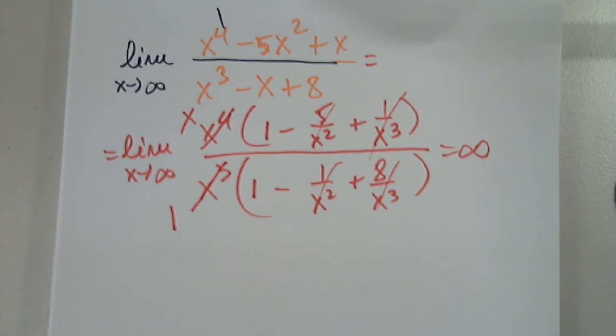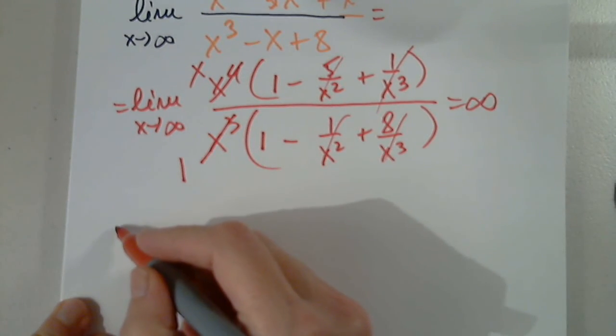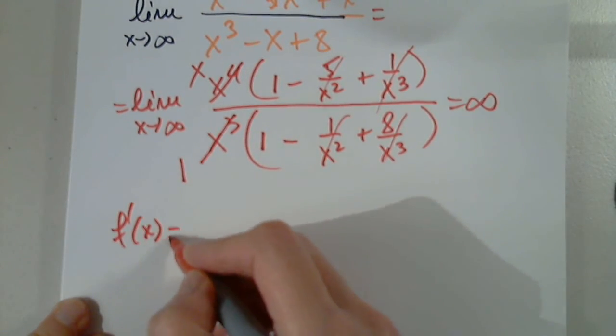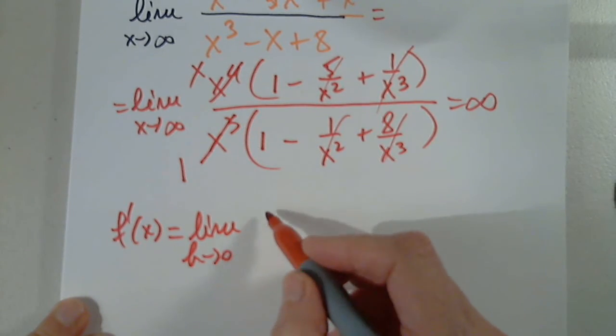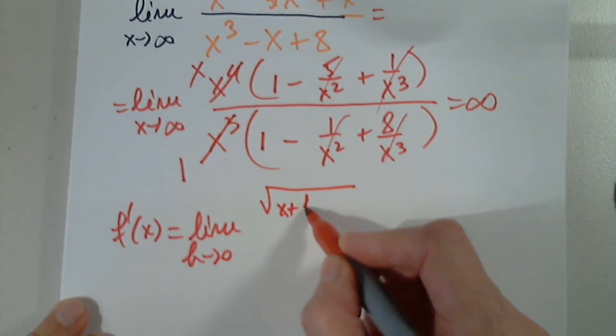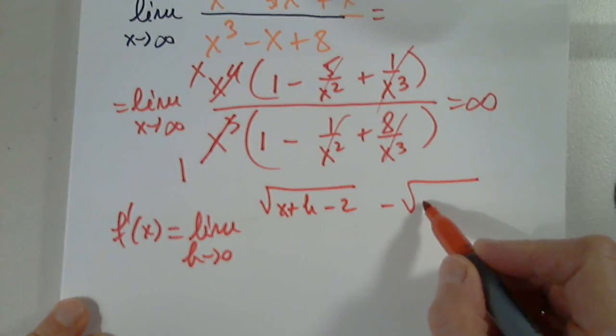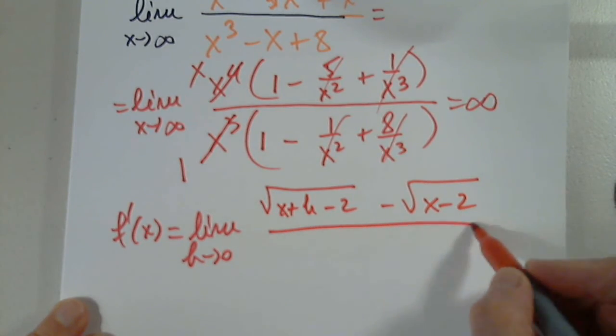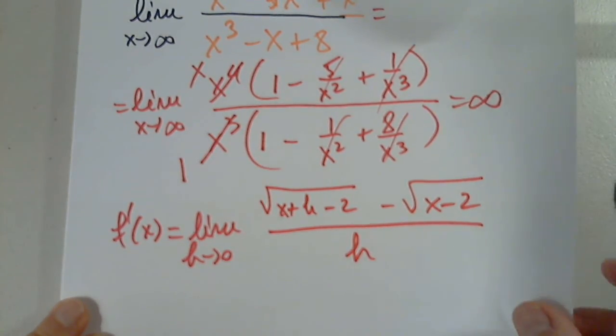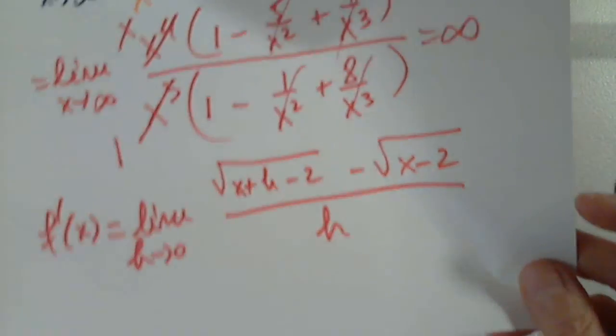Can we do 8? Let's look at 8. Find the equation of the tangent line to the curve. Okay. So we have to find f prime of x. So this is limit as h approaches 0 from the square root of x plus h minus 2 minus the square root of x minus 2 divided by h.